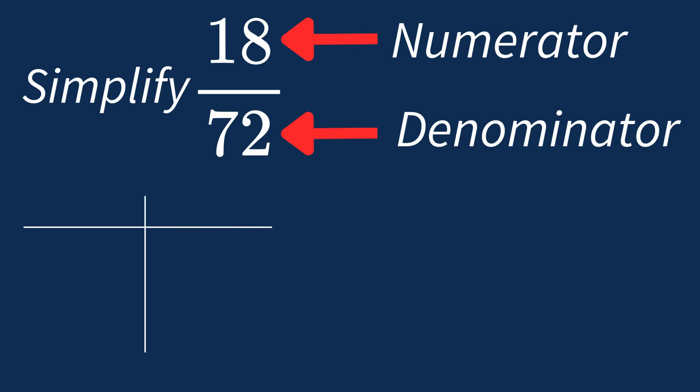First, let's list out the factors for each. For 18, the factors are 1, 2, 3, 6, 9, and 18.